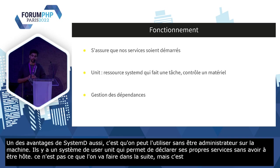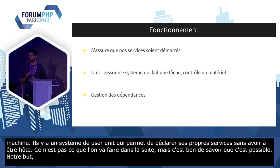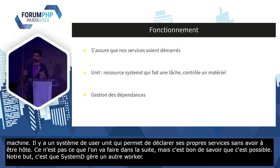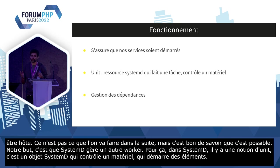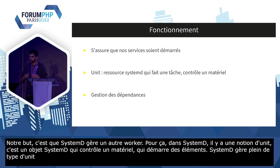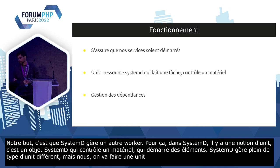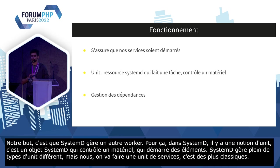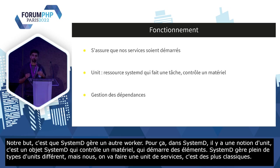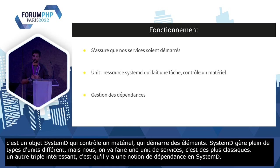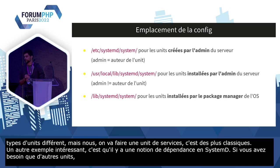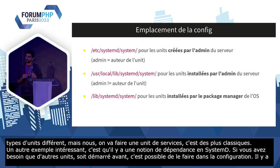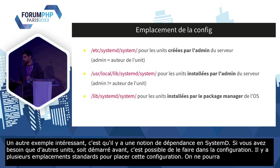Notre but, c'est que ce soit Systemd qui gère notre worker. Dans Systemd, on a une notion d'unit — une ressource, un objet Systemd qui fait une tâche, contrôle un matériel, démarre des sockets. Systemd gère plein de types d'units. Nous, on ne va faire qu'une unit de type service, les unités les plus classiques pour démarrer des services sur la machine. Il y a aussi une notion de dépendance : si vous avez besoin que d'autres unités soient démarrées avant, c'est possible de le spécifier dans la configuration. La config se place dans /etc/systemd/systemd.